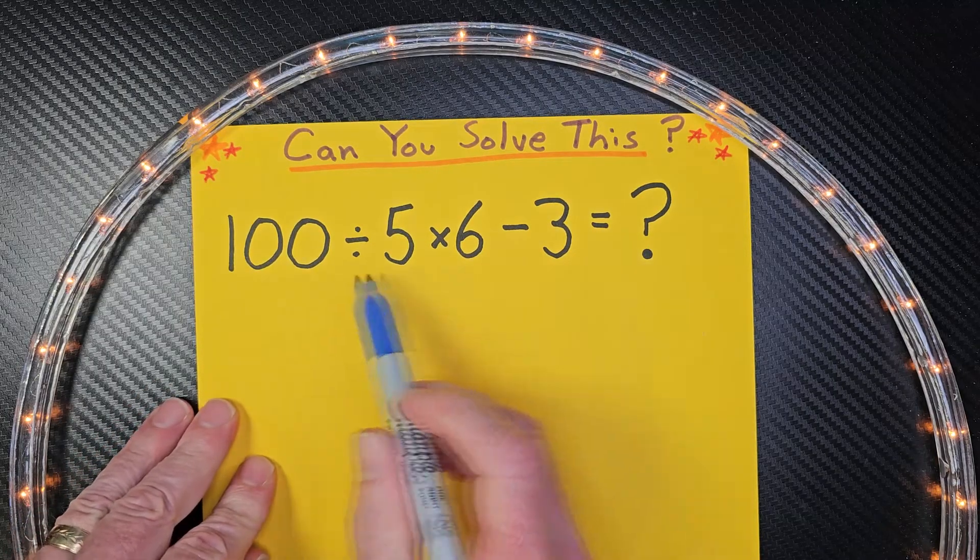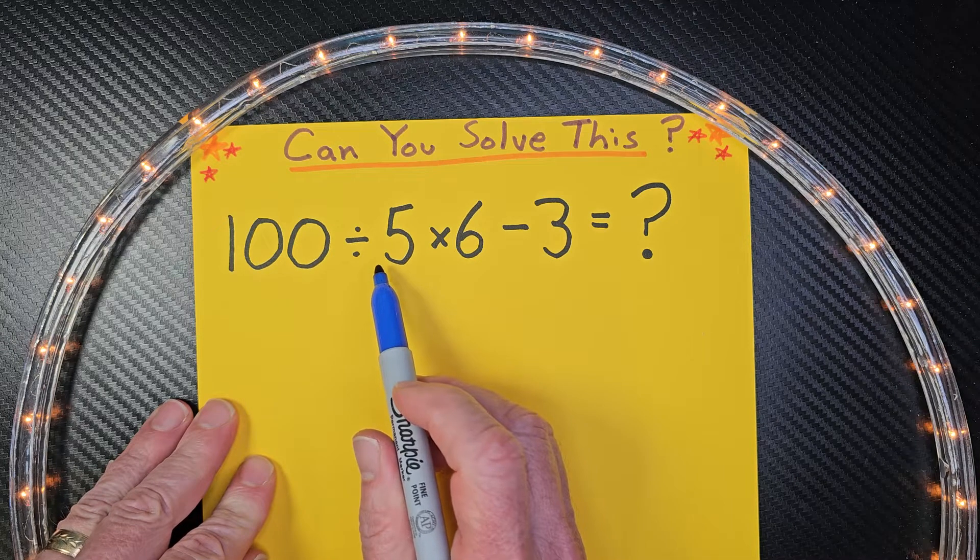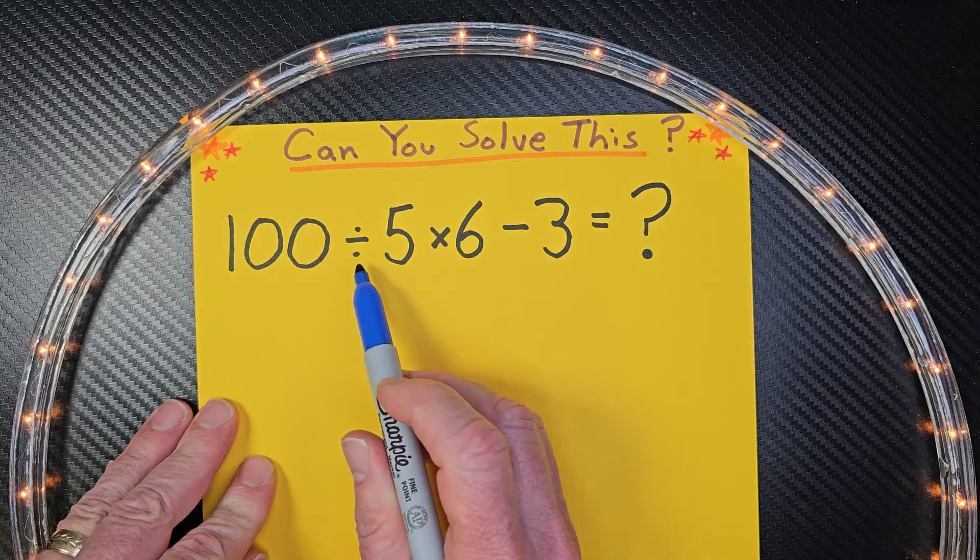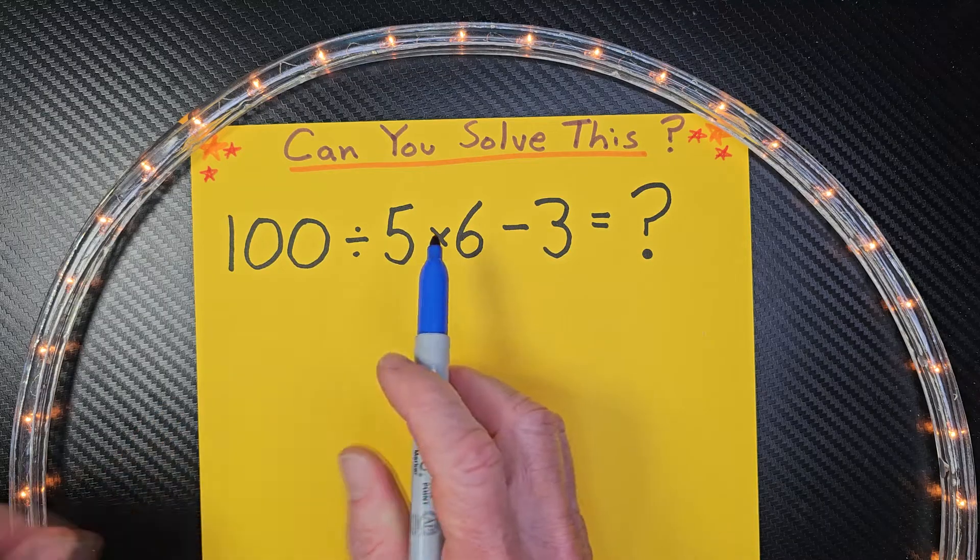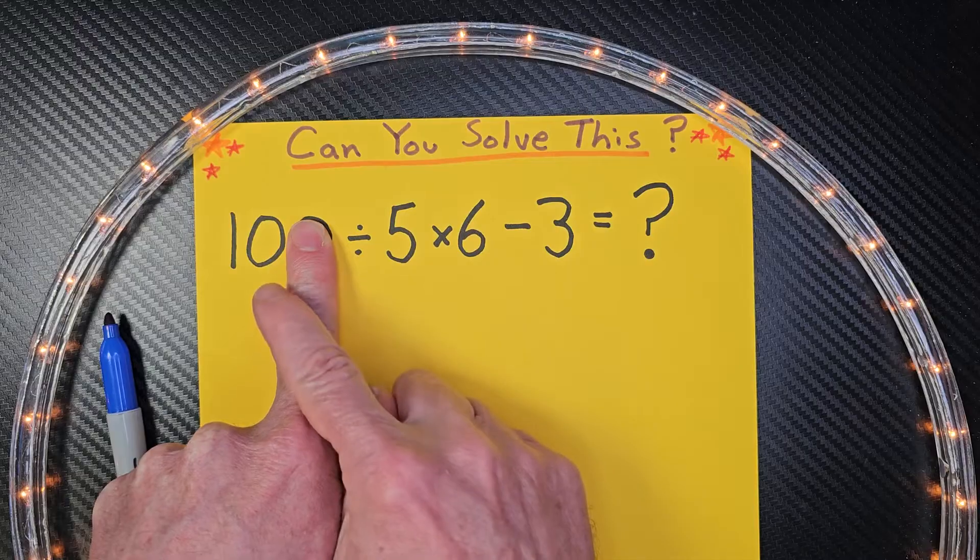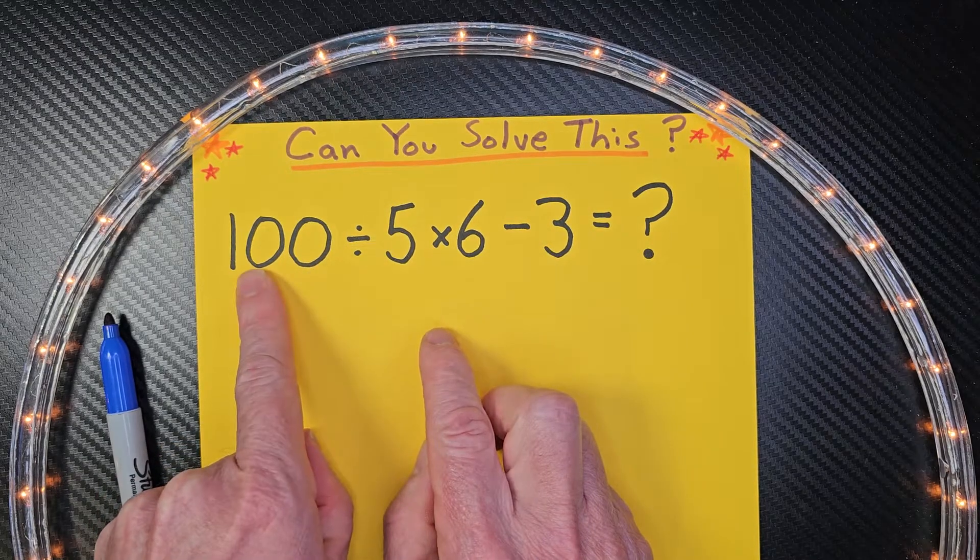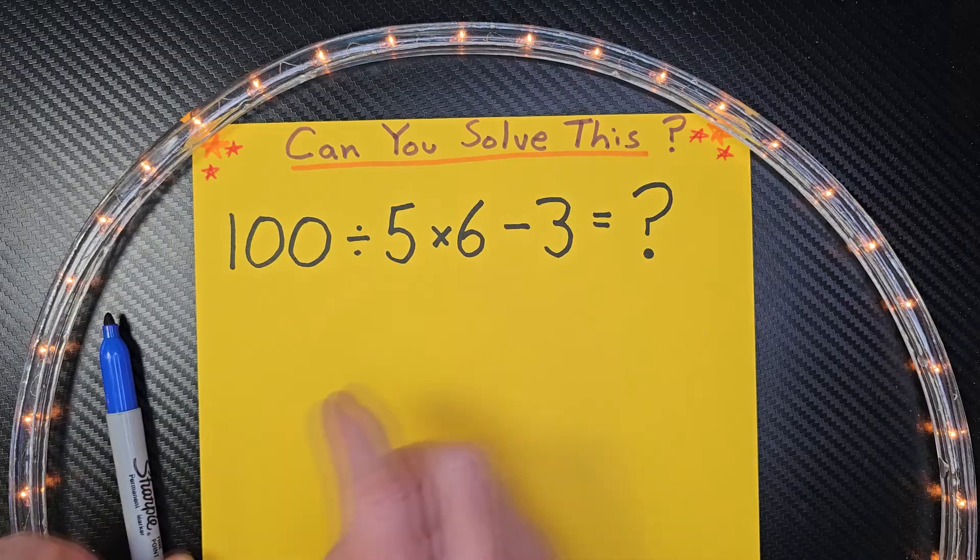So here we have no exponents or parentheses, so I'm going to go ahead and just do my division first. So 100 divided by 5. If you're not familiar how to do that problem, take one of those zeros off there. What is 10 divided by 5? 2. So then 100 divided by 5 would be 20.